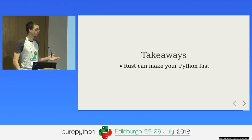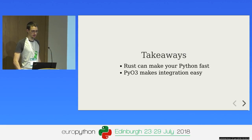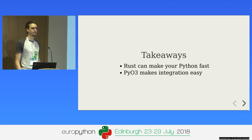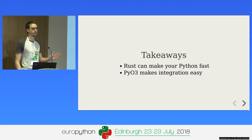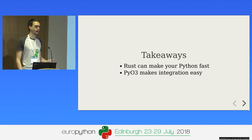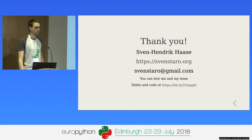Takeaways: Rust can make your Python quite fast, and the PyO3 integration is really quite easy and a joy to work with. Would I use it in production? Probably not yet, to be honest — it's a fairly young project — but it has a great direction. Full disclaimer: I'm not involved in the project. I just wanted to show you that you can combine Rust and Python with very low overhead and very low boilerplate. Thank you for your attention.